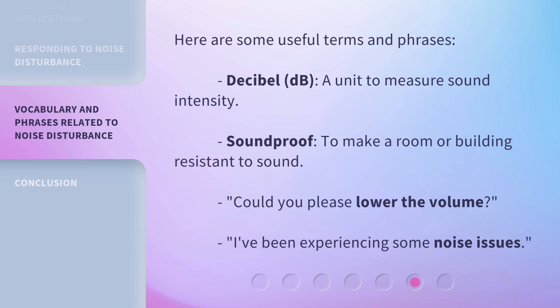Here are some useful terms and phrases. 'Decibel' (dB): a unit to measure sound intensity. 'Soundproof': to make a room or building resistant to sound. Example phrases: 'Could you please lower the volume?' and 'I've been experiencing some noise issues.'